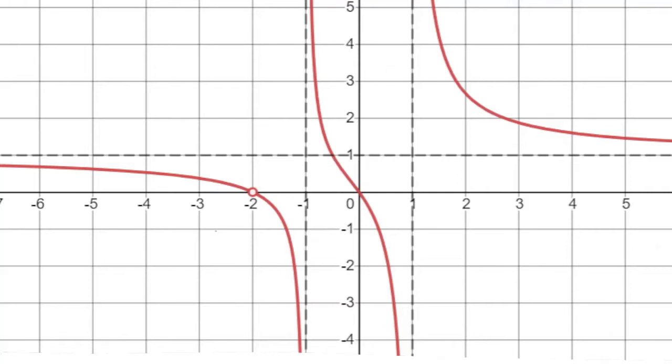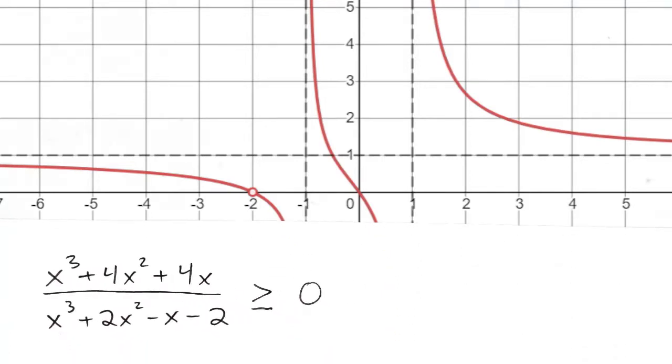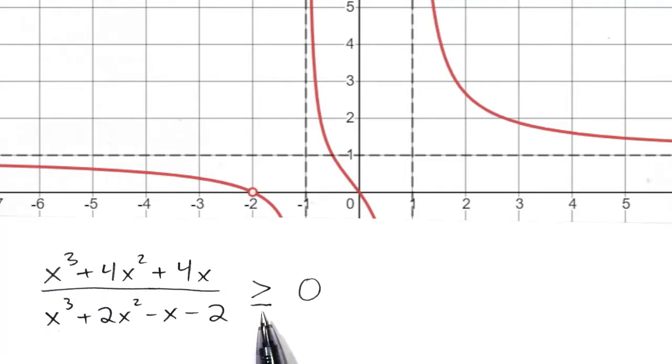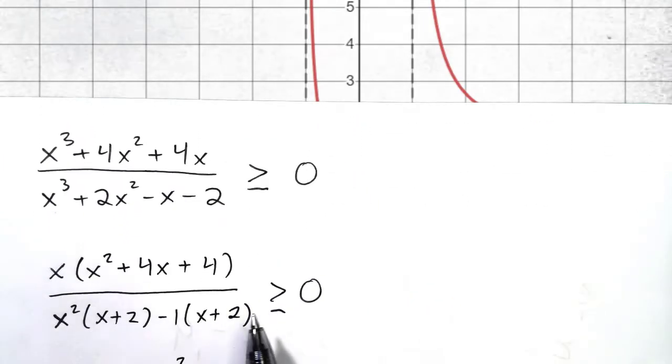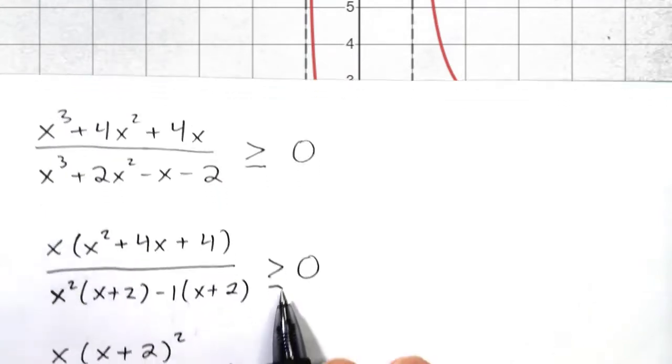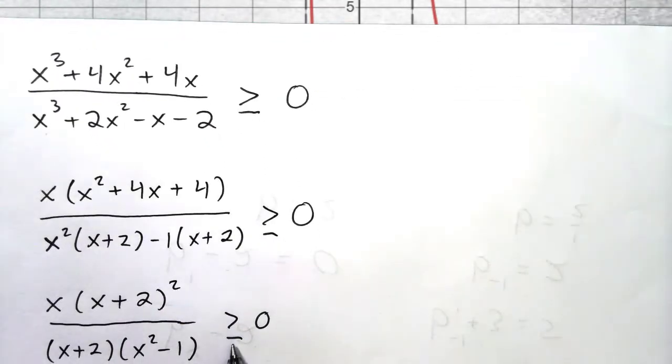Okay, so just one more thing to discuss here, and that is, what do we do if the inequality is greater than or equal to zero instead of greater than zero? Well, we would proceed with the problem the same way. This would be greater than or equal to zero. This would be greater than or equal to zero.